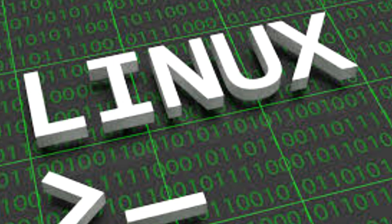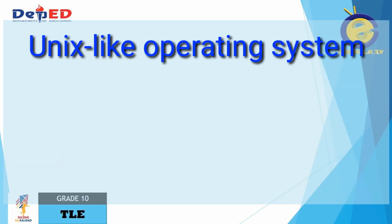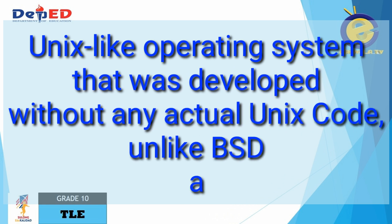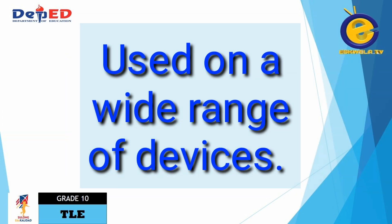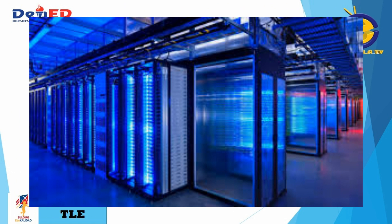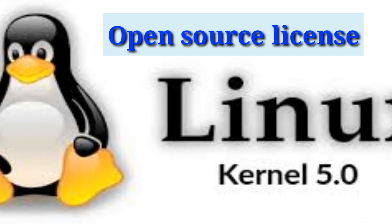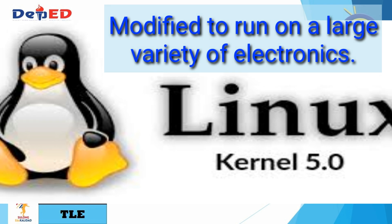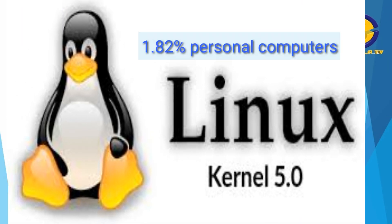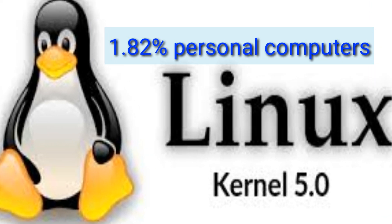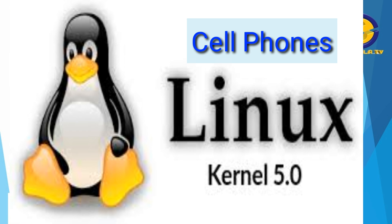The next example of operating system is Linux, or GNU Linux. It is a Unix-like operating system that was developed without any actual Unix code. Unlike BSD and its variants, Linux can be used on a wide range of devices, from supercomputers to wristwatches. The Linux kernel is released under an open source license, so anyone can read and modify its code. It has been modified to run on a large variety of electronics, and it is estimated that Linux is used on 1.82 percent of all personal computers.